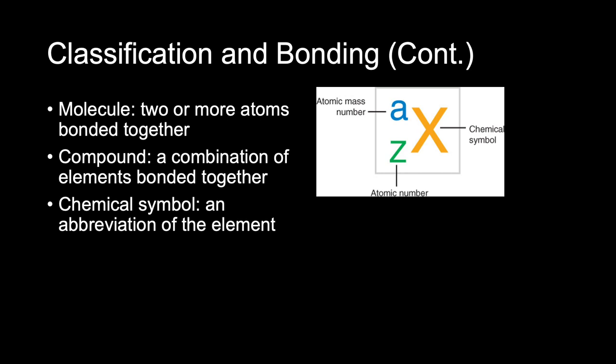If you look at the chemical shorthand diagram, it shows the format: the large letter is the chemical symbol, the top number to the left is the atomic mass number, and the bottom number is the atomic number.